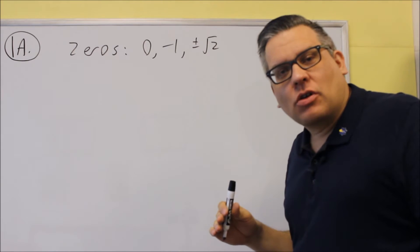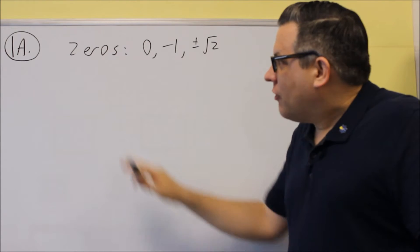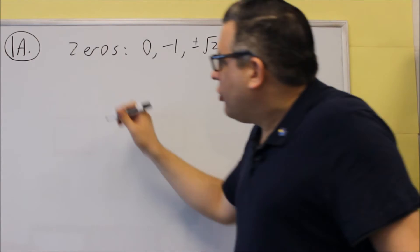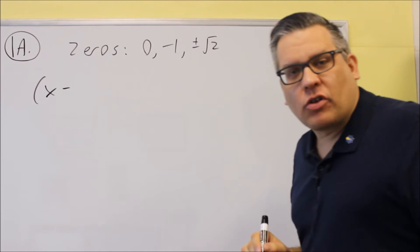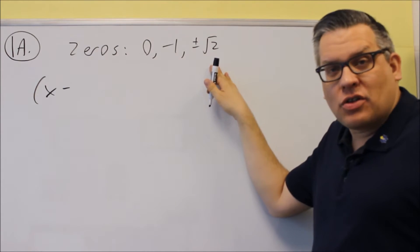These kind of problems where it asks you to create a polynomial, you're basically going to use the formula x minus whatever the zero happens to be. So it's always x minus, and we'll just put all these in there.